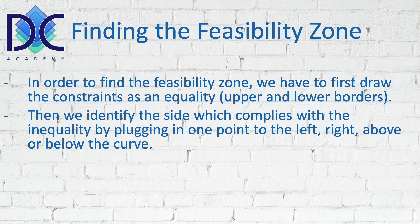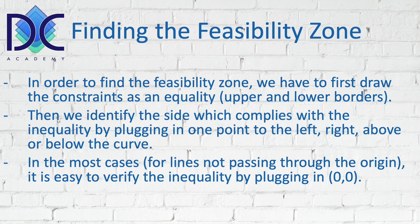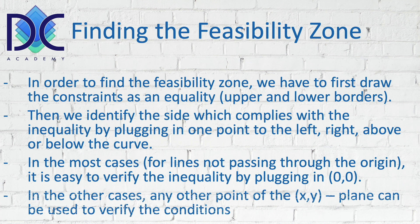When we identify the line we have to find out which side is part of the constraint — which side complies with the constraint. It can be to the left, to the right, above, or below, but we have to select one point in one of the zones because the line cuts the plane in two parts. The most convenient point we can take is (0, 0). We can verify the inequality by using the origin to confirm which side of the plane, below or above the line, is compliant with the constraint.